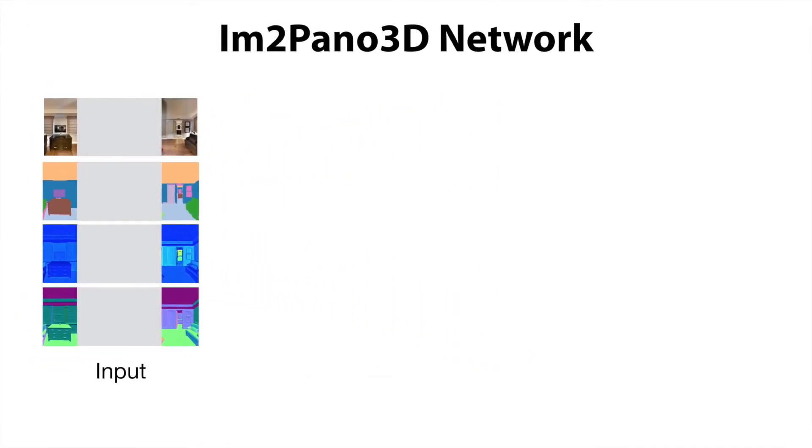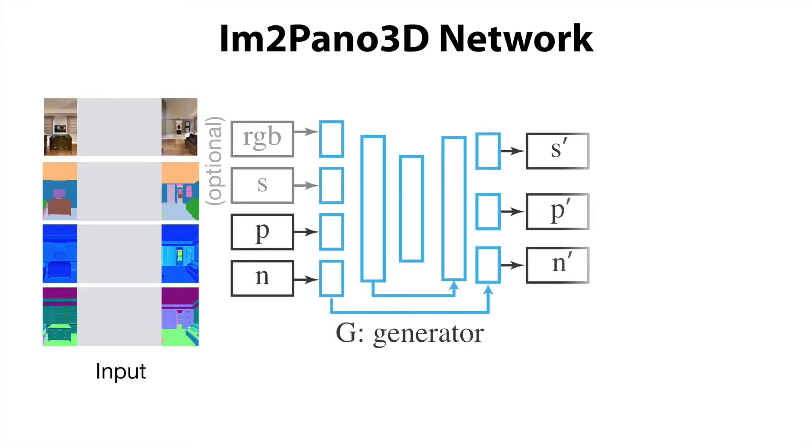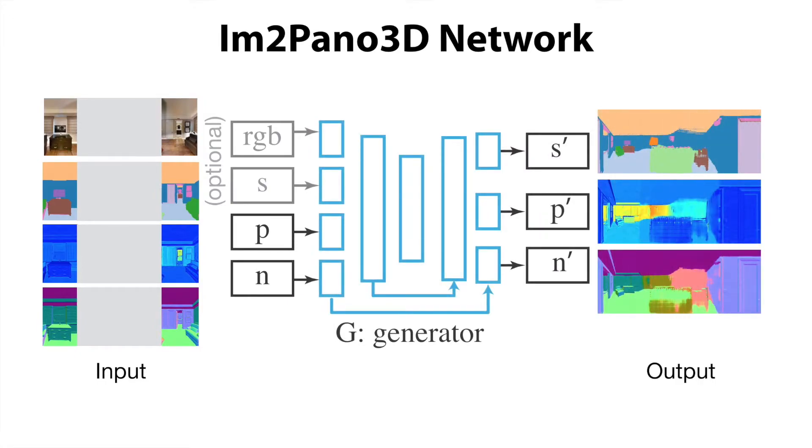Our network architecture follows an encoder-decoder structure that takes in a panorama with missing regions and produces a completed panorama where the missing regions are filled with predictions of semantics and 3D structure.